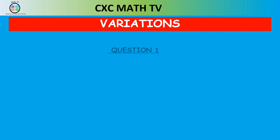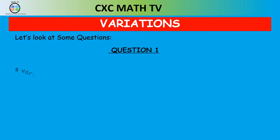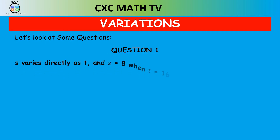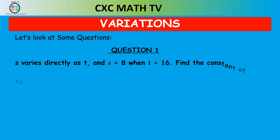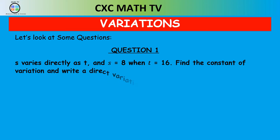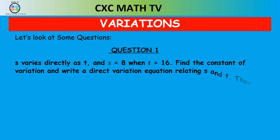Now let's look at a more exam-style question on direct variation. It says: s varies directly as t, and s is 8 when t is 16. Find the constant of variation and write a direct variation equation relating s and t, then find t when s is 64.